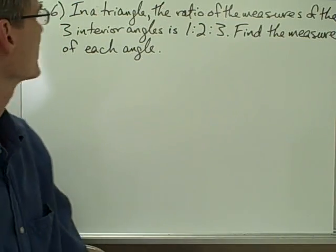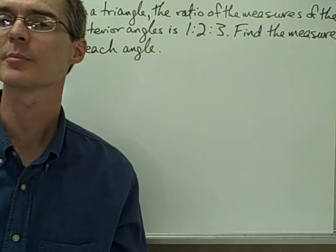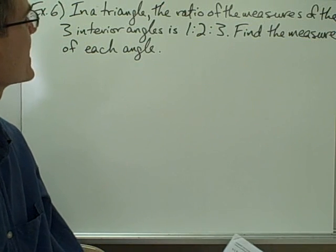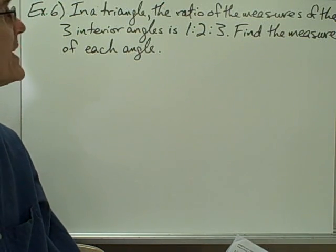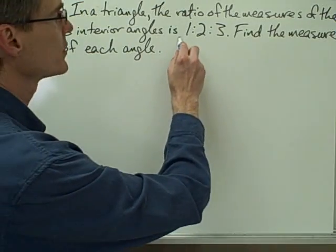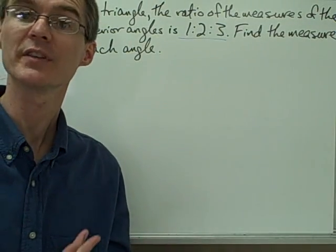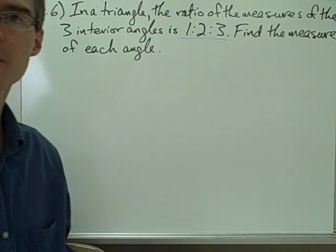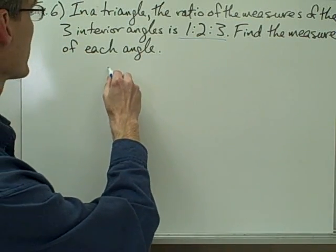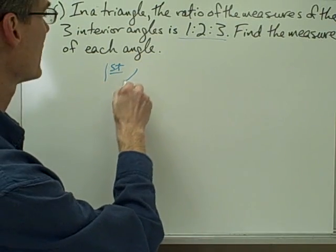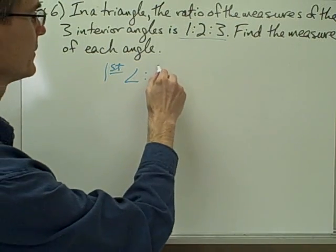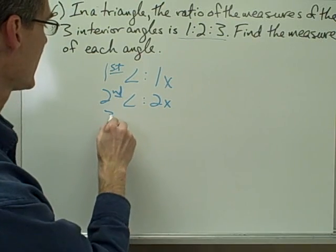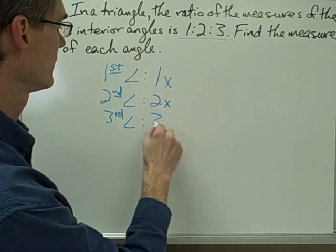Let's take a look at another similar example. I'm skipping example number 5 — it's very similar to example 4, so I want you to solve that one on your own. I'm going on to example number 6. Example 6 says: in a triangle, the ratio of the measures of the three interior angles is 1 to 2 to 3. Here we have a ratio involving a comparison of three quantities. Find the measure of each angle. I'm going to let my first angle be 1x, my second angle be 2x, and my third angle be 3x.